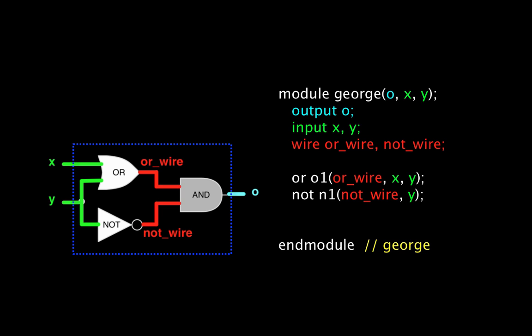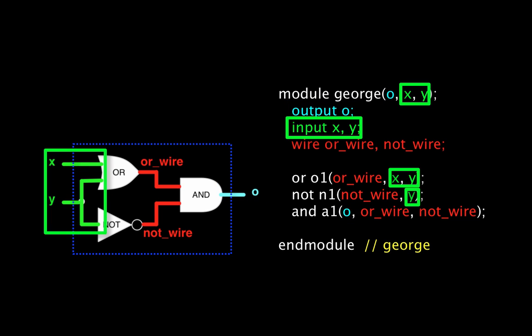Lastly, I can instantiate an AND gate, connect its inputs, and connect its output to the output port O. So you can see, there is a clear correspondence between the Verilog I wrote and the circuit.